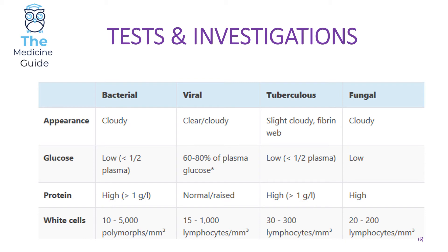One thing to bear in mind is that in bacterial meningitis, the CSF will show polymorphs — and polymorphs include basophils, eosinophils, and neutrophils. This slide is very high yield.